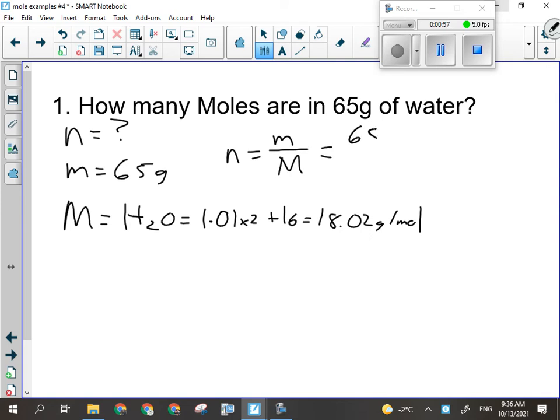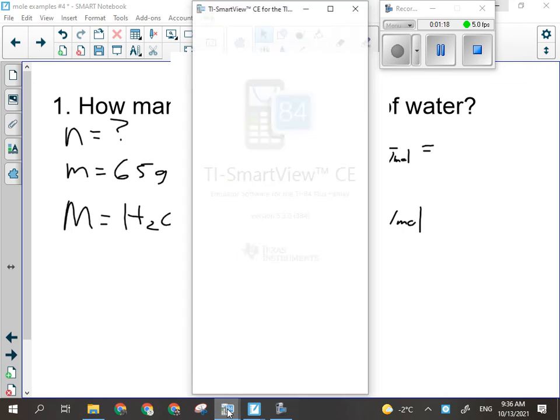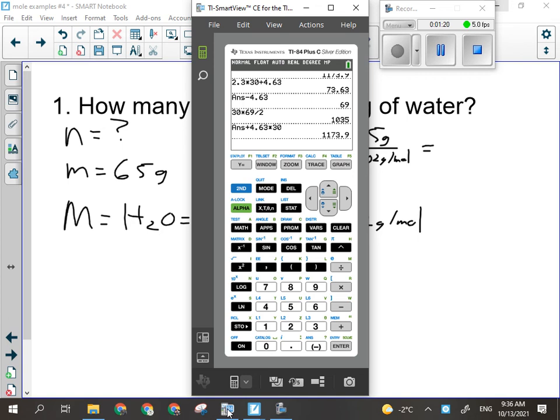That would be 65 grams divided by 18.02 grams per mole, so the grams will cancel, leave us with moles. And once my calculator finally fires up we'll have our answer. Should be 3 point something. 65 divided by 18.02, all right, 3.61.